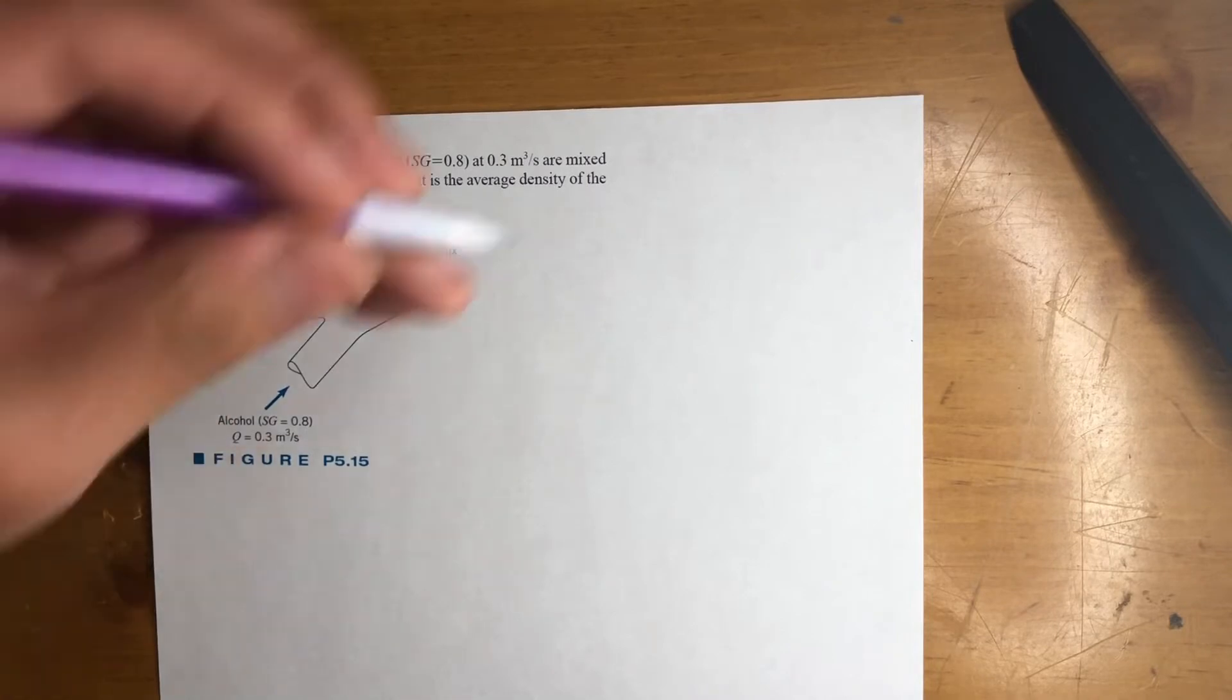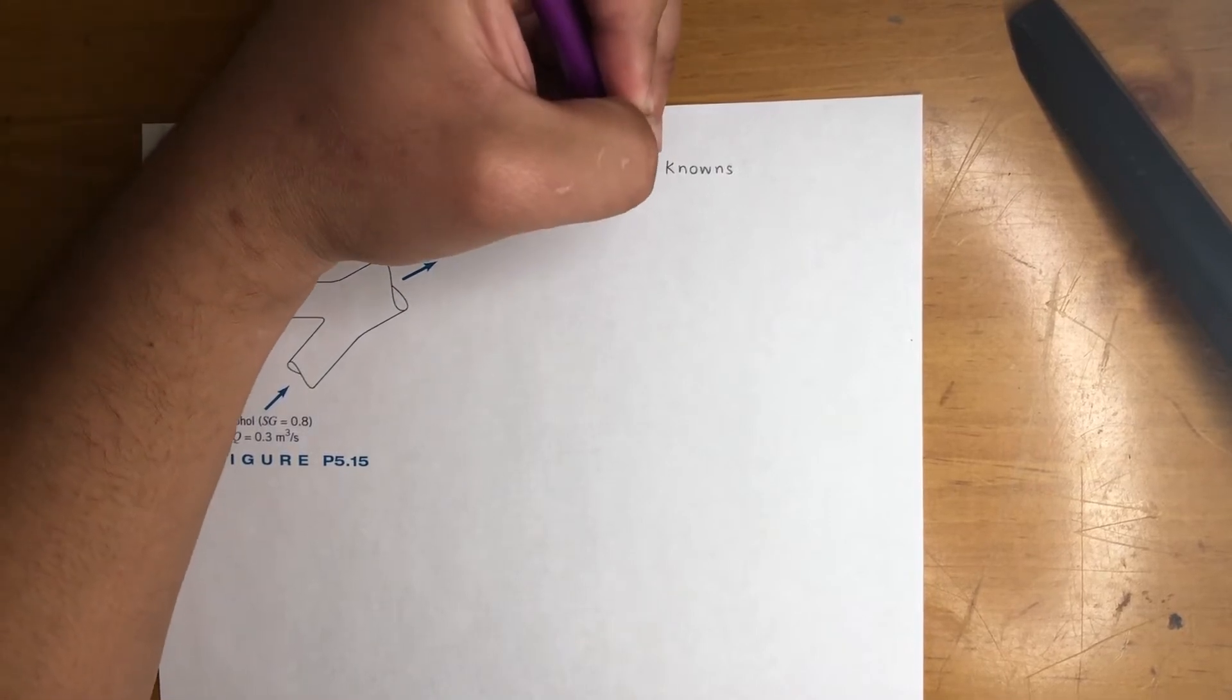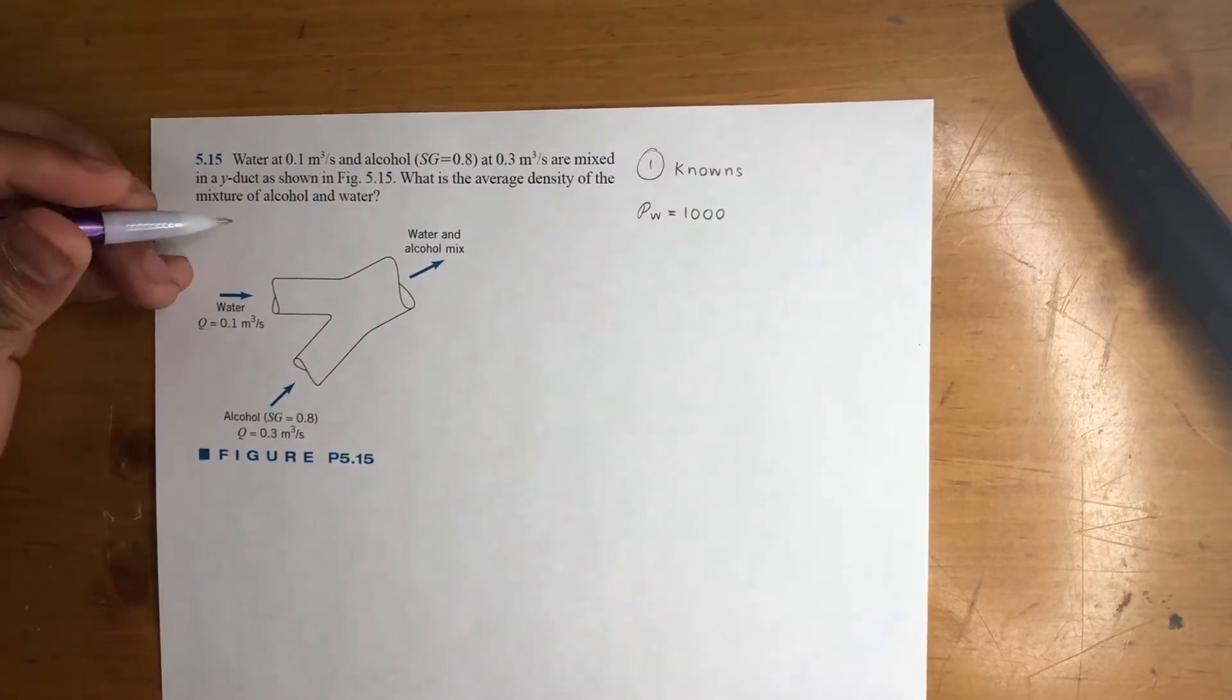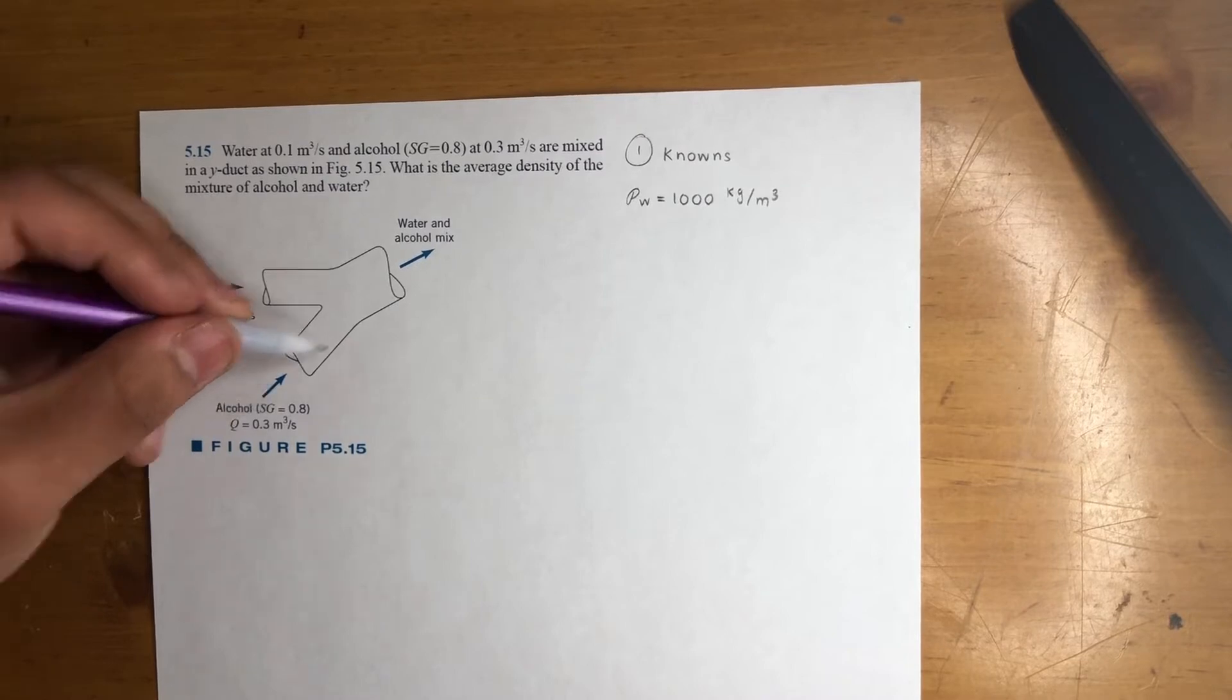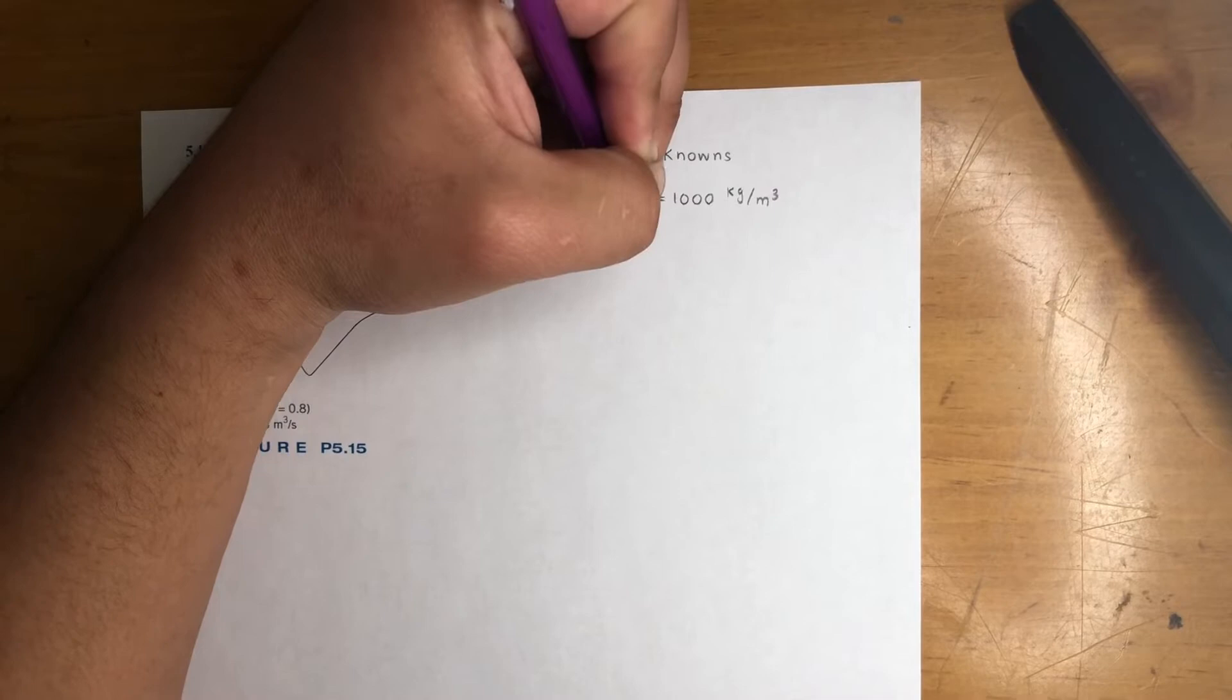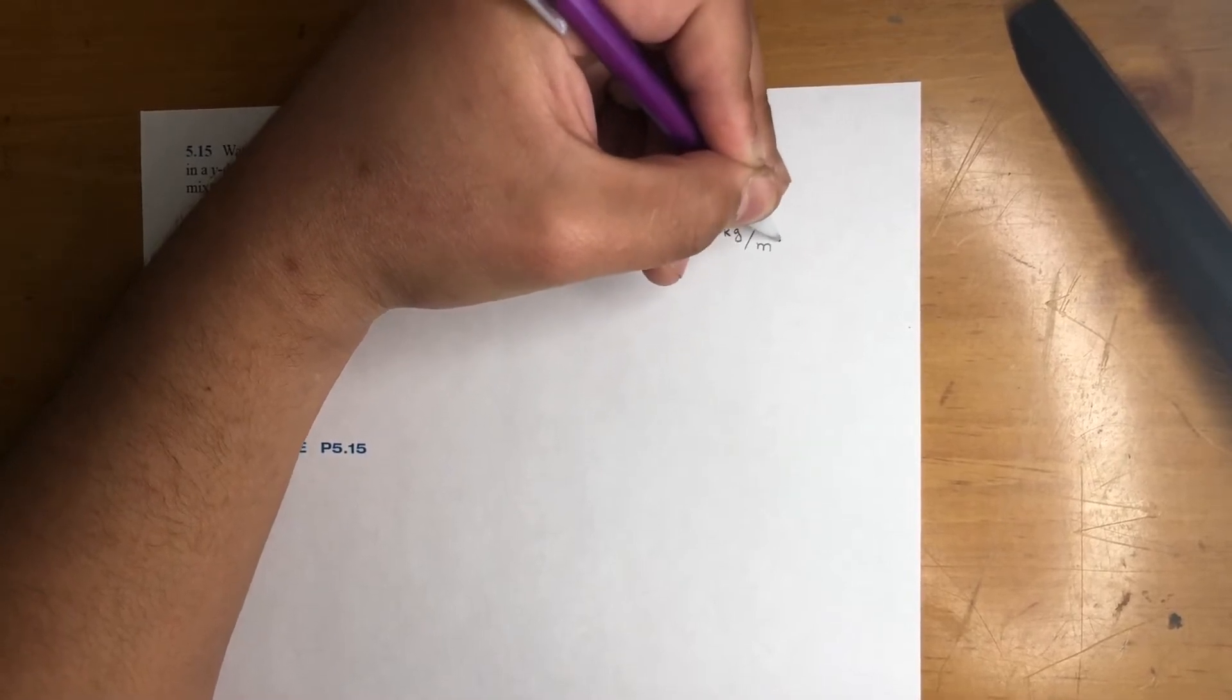Alright, so first thing, like always, we get the knowns. Now we're dealing with water and alcohol and then they mix, right? So we need the density of water. That is a thousand kilograms per meter cubed. And the density of alcohol, you should know this by now, you gotta multiply the density of water times specific gravity. So the density of alcohol is 800 kilograms per meter cubed.